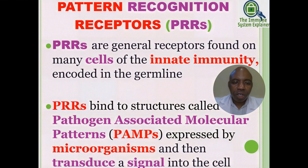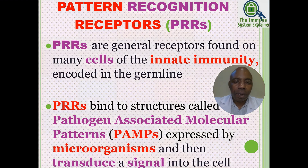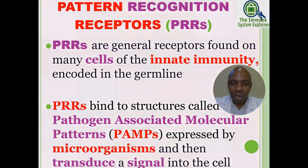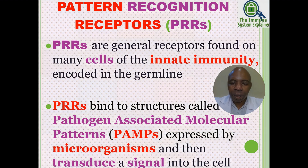Pattern recognition receptors — PRRs — are general receptors found on many cells of the innate immunity. They are encoded in the germline, meaning you inherit them. PRRs bind to structures called pathogen-associated molecular patterns, or PAMPs, which are structures expressed by microorganisms. After being bound, PRRs are able to transduce the signal into the cell.